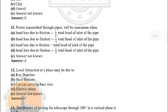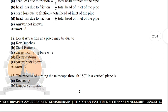Next: power transmitted through the pipe will be maximum when — the correct answer is: head loss due to friction equal to 1/3 of the total head at the inlet of the pipe.